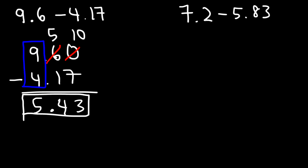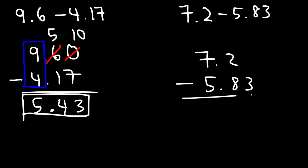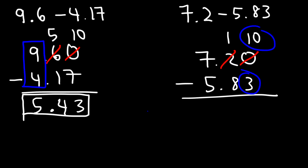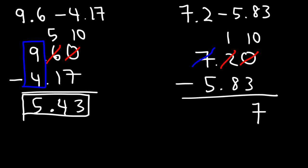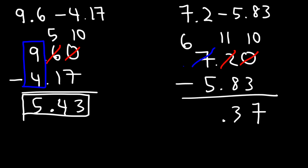For 7.2 minus 5.83, add a zero to get 7.20. We need to borrow a 1 from 2, making it 1, and the 0 becomes 10. So 10 minus 3 is 7. Then we can't do 1 minus 8, so borrow a 1 from 7, making that a 6, and 1 becomes 11. So 11 minus 8 is 3, and finally 6 minus 5 is 1. The final answer is 1.37.